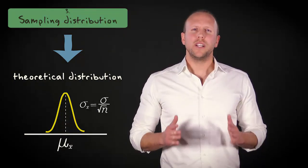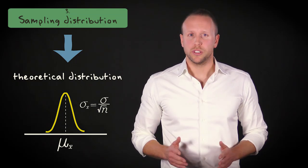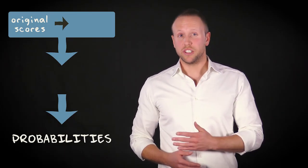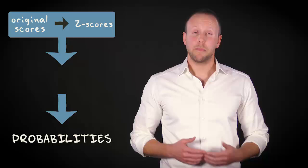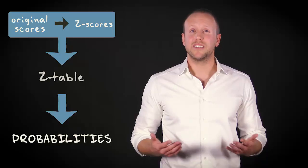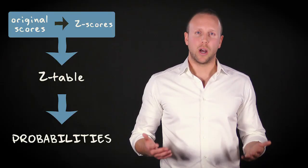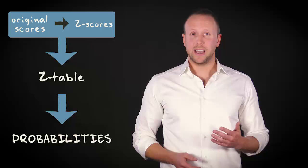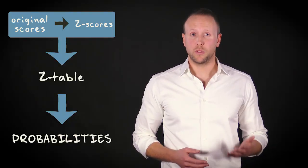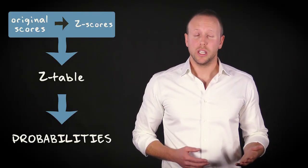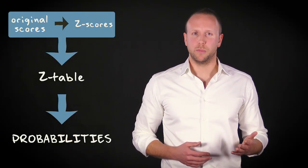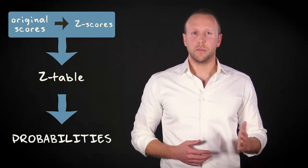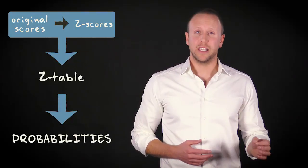The very nice thing about normal distributions is that we can find probabilities by changing original scores into z-scores and then employing the z-table. If we would like to know what the probabilities are of selecting random samples or subjects from a population, we can apply this logic to sampling distributions and, as long as they are normally distributed, to population distributions.